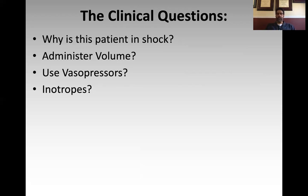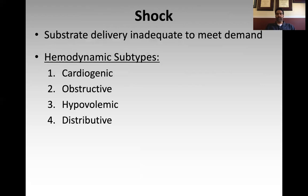Shock is really the reason why we do echos as intensivists and critical care practitioners. When I go into a patient's room with the ultrasound trying to assess why they're in shock, I always keep in mind the four hemodynamic subtypes of shock, because it helps frame the assessment and think through the clinical picture as you get your views. The four subtypes — cardiogenic, obstructive, hypovolemic, and distributive — and thinking about all the specific causes of each shows you how powerful ultrasound is in giving a direct, quick idea of what's going on.